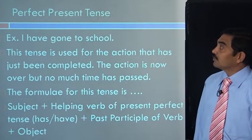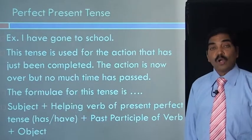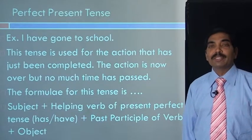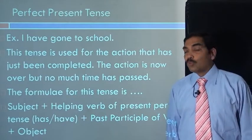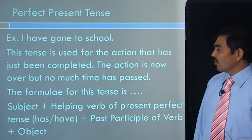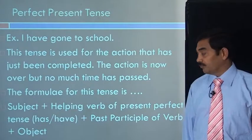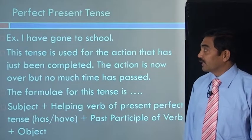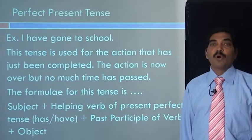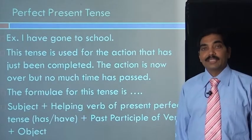Let us go to the third tense form: perfect present tense. Let us take an example: I have gone to school. This tense is used for the action that has just been completed. The action is now over but not much time has passed; it is just recently over. The formula for this tense is subject plus helping verb of present perfect tense — has or have — plus past participle of verb, in this case gone. Go is the original verb, went is the past tense of go, and gone is the past participle of verb go, plus object — in this case to school.